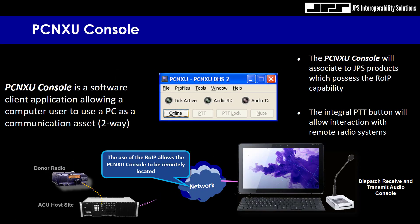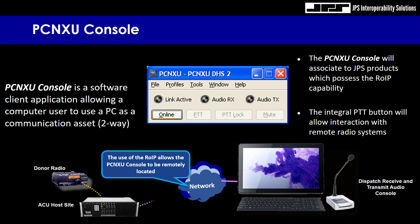Let's talk about the PCNXU console. The console is a software client application allowing a computer user to use a PC as a communication asset — two-way, both transmit and receive. The PCNXU console will associate to JPS products which possess ROIP capability. The integral PTT button allows interaction with remote radio systems. In the diagram, we have a donor radio attached to an ACU-2000 at the host site. ROIP allows the PCNXU console to be remotely located on a computer, and when the link active LED is on, you can key the microphone and listen to receive audio from the radio at the distant end of the 2000.